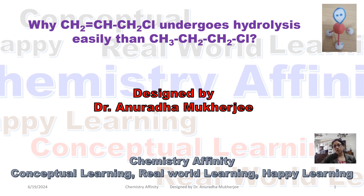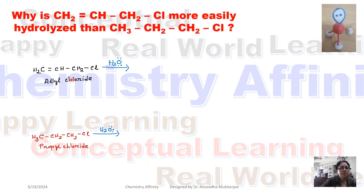Today's video I am going to discuss a practice problem: why CH2=CH-CH2Cl undergoes hydrolysis more easily than CH3CH2CH2Cl. The first compound is allyl chloride and the second one is propyl chloride.